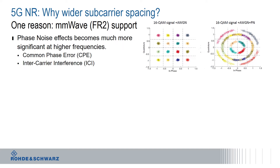As we can see here, there are basically two challenges we face: one is the common phase error (CPE), and the other is inter-carrier interference. On the right-hand side you see a 16-QAM signal with additive white Gaussian noise. If we add phase noise, as expected at the FR2 frequency range, you can clearly see how the constellation diagram becomes twisted — and that's something we want to counter-attack.